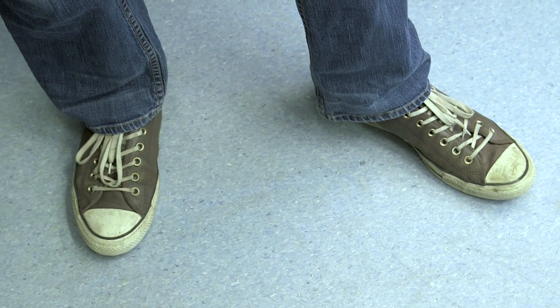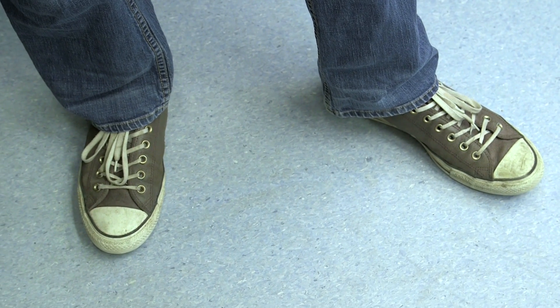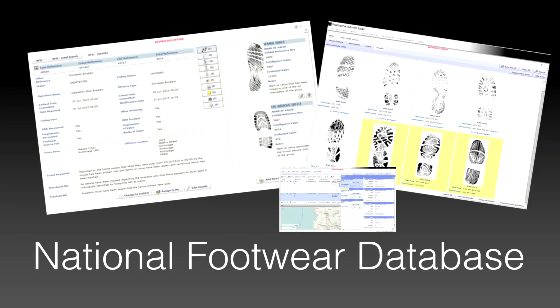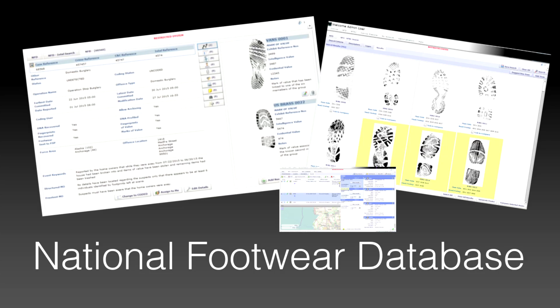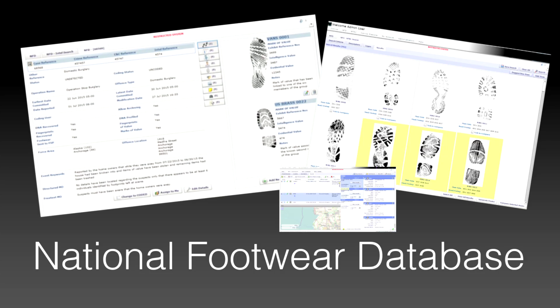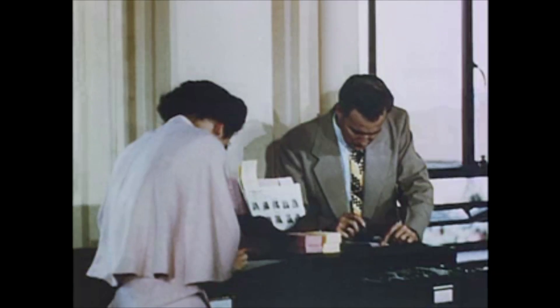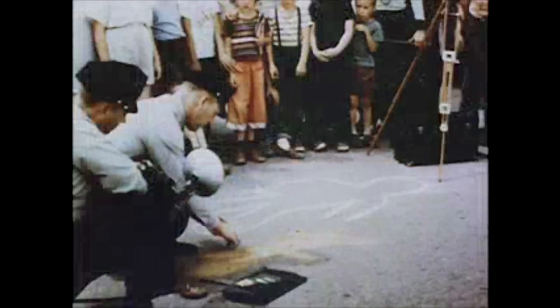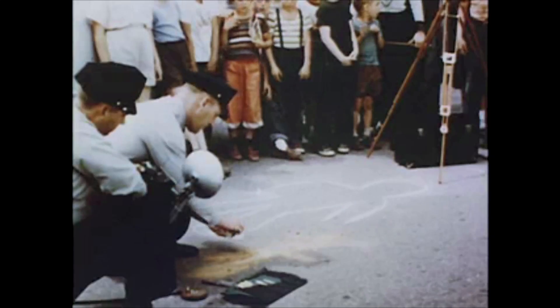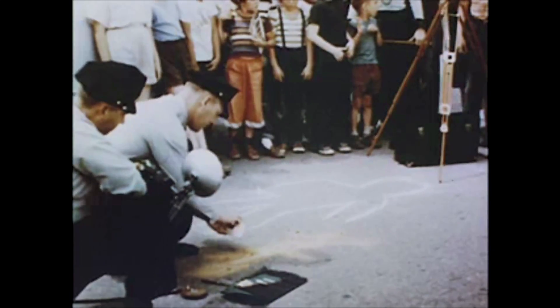The problem with acquiring images like this is that they have to take something like this and scan it into a computer. There can be quite a long period between acquiring an image like this and actually uploading it to a national footwear database — very similar to the fingerprint databases we're all familiar with from things like CSI. The idea is that they'll be able to take marks acquired from crime scenes, upload them into this database, take marks acquired from people in custody, and then try and match them.